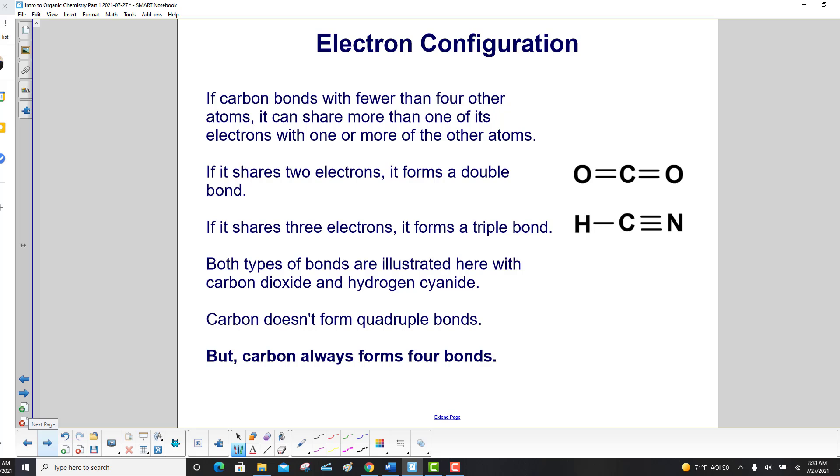If carbon bonds with fewer than four other atoms, it can share more than one of its electrons with one or more of the other atoms. If it shares two electrons, it forms a double bond. If it shares three electrons, it forms a triple bond.